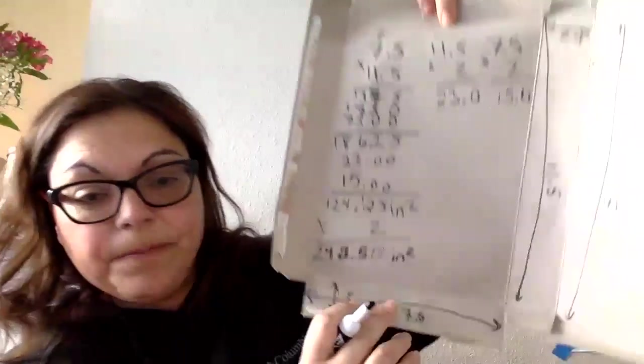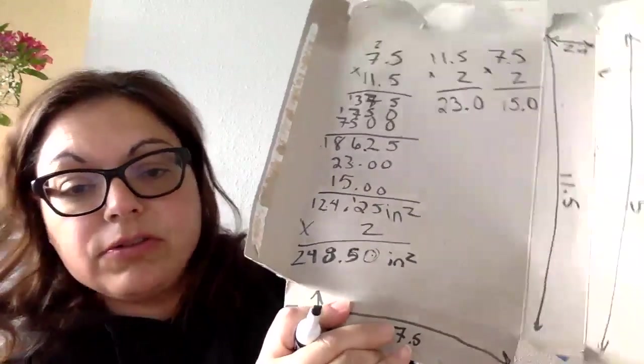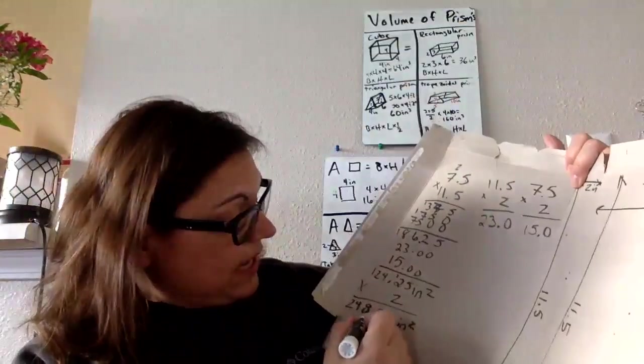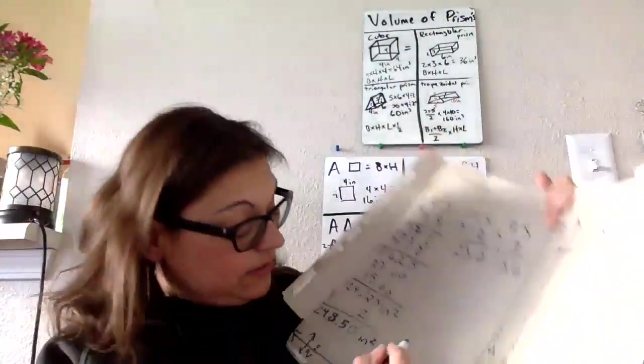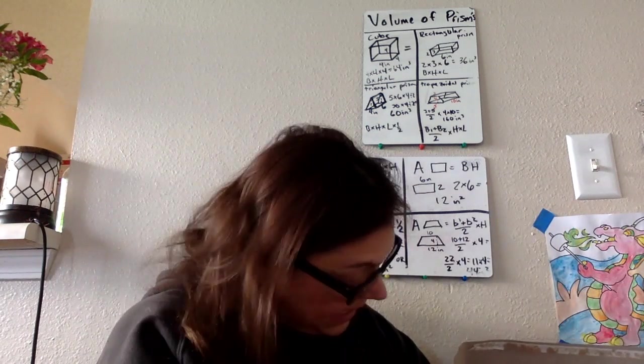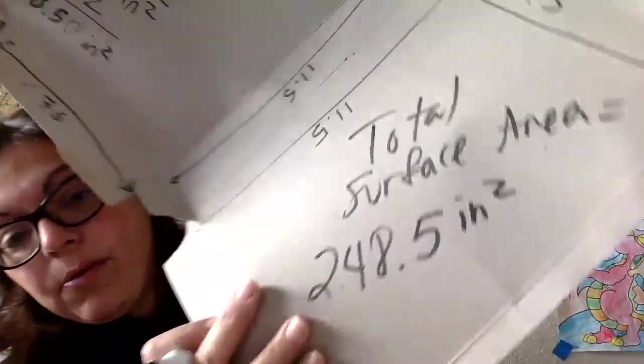So my total surface area of the box is 248 and a half inches squared. So total surface area is 248 and a half inches squared.